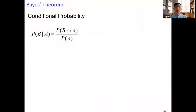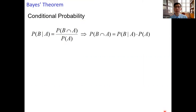Let's start with the conditional probability formula. Here we have the probability of B given A equals the probability of the intersection of B and A over the probability of A. Solving for the probability of the intersection of B and A, we get the probability of B given A times the probability of A.